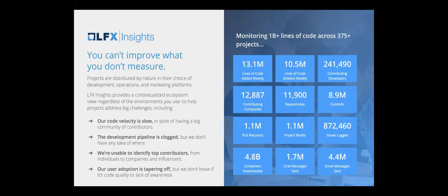We've instrumented 11,900 repositories. We're looking at 8.9 million commits annually, more than a million pull requests, more than a million builds, issues logged in Jira, GitHub Issues, Bugzilla, container downloads from registries — how many people are pulling down images — and collaboration activity across chat and email, including formal groups and their activity.